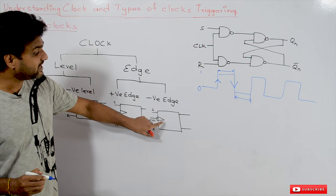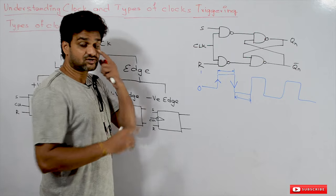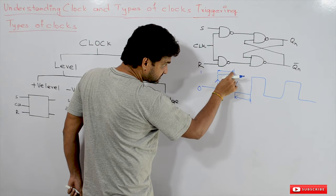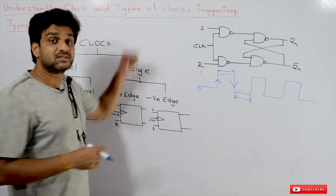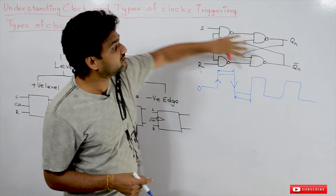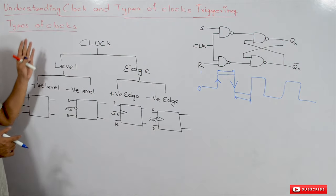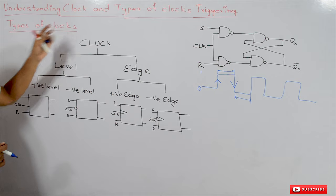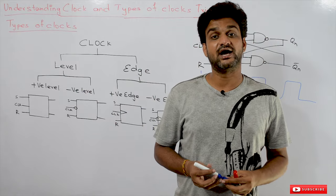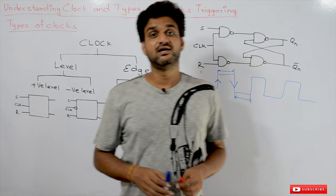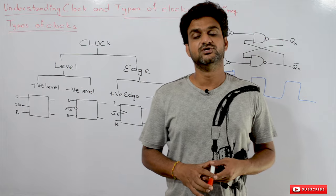This is how a negative edge clock is represented, which means that this flip-flop is getting a negative edge clock triggering — whenever there is a transition from 1 to 0, on that edge the inputs are allowed onto the circuit. This is the basic understanding of clock and the different types of clock triggering mechanisms. Hope you got clarity on this concept. Thanks for watching — if you haven't subscribed to our channel, please subscribe and press the bell icon for the latest updates. Post any doubts in the comment section below.